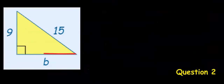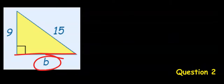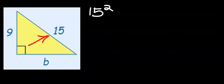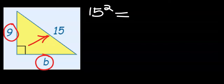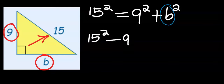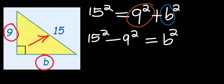Let's find the length of this base. The first step is to identify the longer side, which is the side facing the right angle, and it will be squared. The next step is to square each of the remaining sides and add them. Next, isolate b: 9 squared needs to move, and on the other side it becomes minus 9 squared.